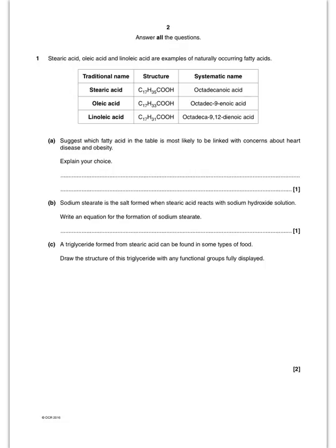Okay, so question one. Got three naturally occurring fatty acids there and it wants me to tell which one is most likely to be linked to heart disease and obesity. Well, the one that we would go for is this one there. The reason why is because it's saturated fat. You can see for these two they've got an ene, so they have carbon-carbon double bonds, so they are unsaturated. Whereas this one has got no carbon-carbon double bonds, which we can tell by the name, and therefore that is saturated.